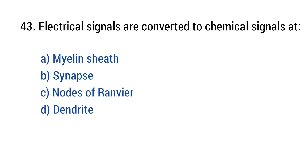Question number forty-three. Electrical signals are converted to chemical signals at? The right answer is option B: Synapse.